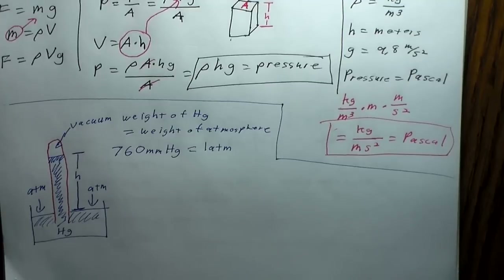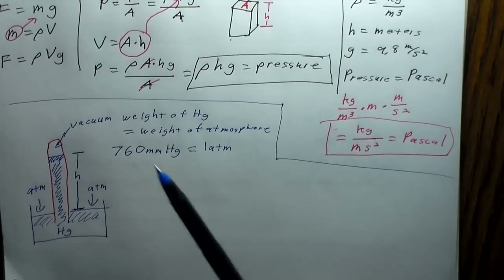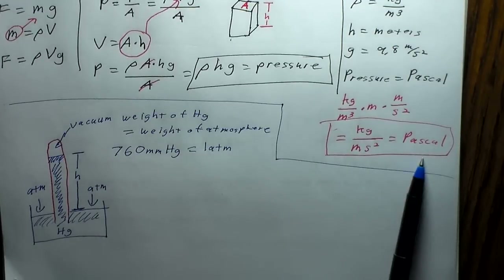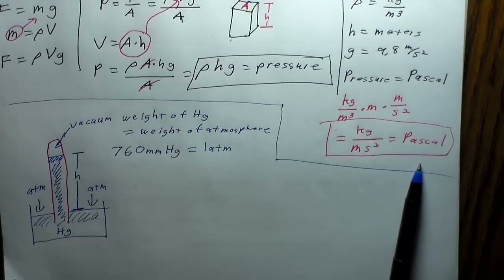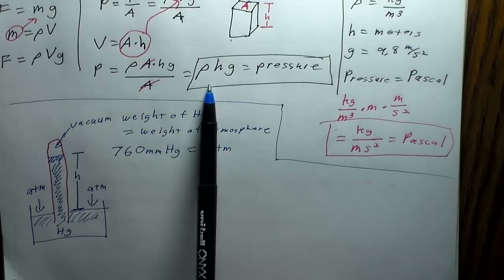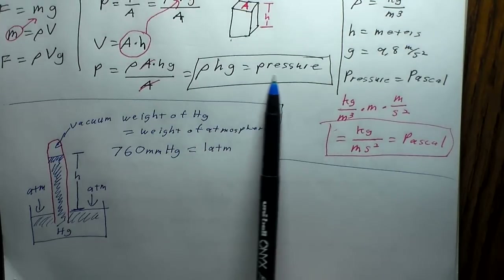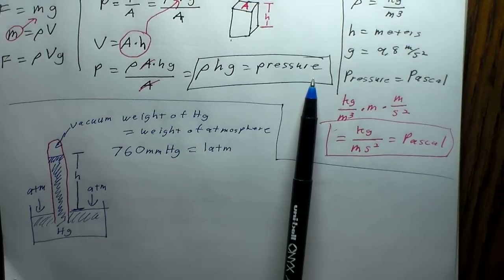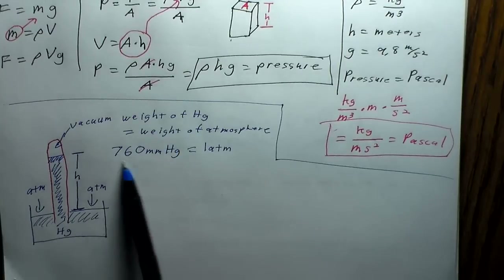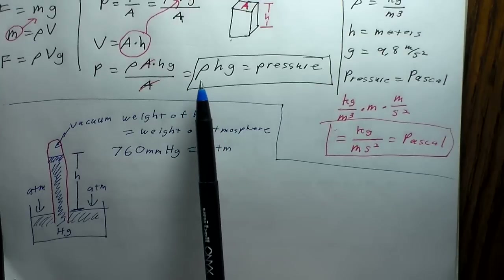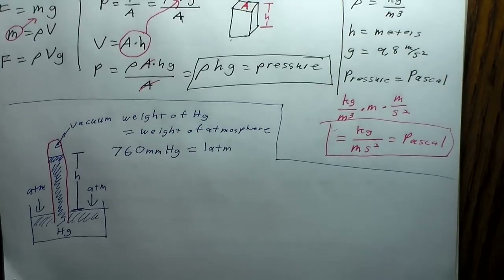Measuring from the bottom to the top, that's 760 millimeters — about three-quarters of a meter high — equal to one atmosphere, or 1 ATM. Now we can calculate what one atmosphere is in terms of Pascals using our equation: pressure equals density times height times gravity. We have our height of 760 millimeters of mercury.